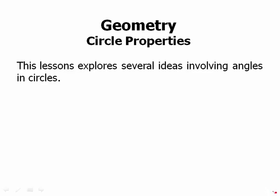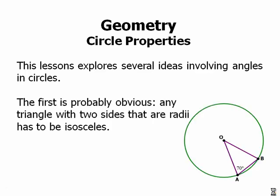Now we can talk about some circle properties, and many of the properties we'll talk about in this video involve angles and circles. The first one is about lengths, and this is relatively easy. Any triangle with two sides that are radii has to be isosceles. If we look at this triangle here, OB and OA are radii, so of course they're equal because all radii of the same circle are equal. That means we have a triangle with two equal sides — an isosceles triangle.